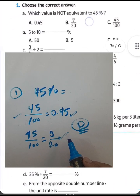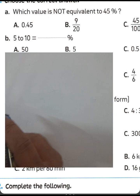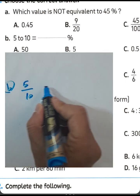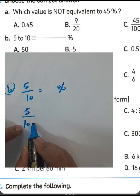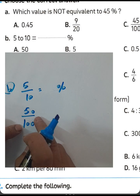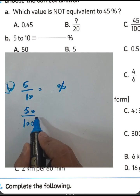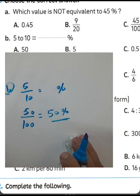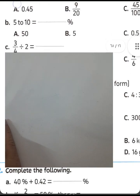Next example: convert 5 to 10 to a percent. The ratio 5 to 10 means 5 over 10, which equals one half. To convert this fraction to percent, multiply numerator and denominator so the second term equals 100, giving 50%. Choose letter A.